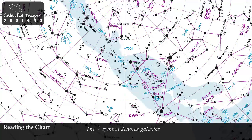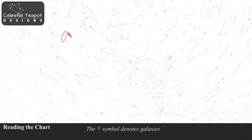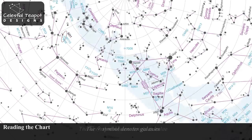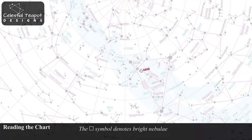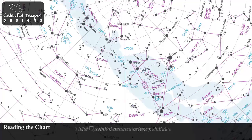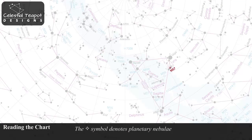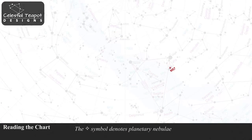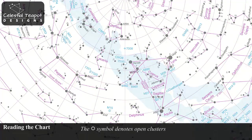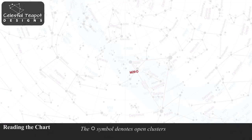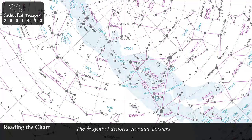Galaxies are drawn on the chart as ellipses. Face-on galaxies will be almost round; edge-on galaxies will be long and thin. Square symbols on the chart denote bright nebulae. This circle with a cross denotes planetary nebulae. Open clusters are shown with a small starburst symbol. And this circular symbol with an inset cross denotes globular clusters.